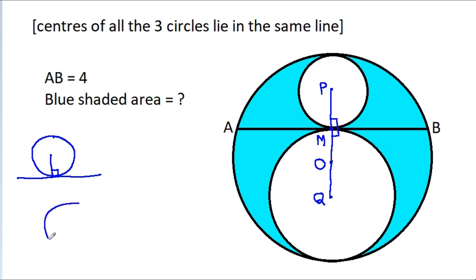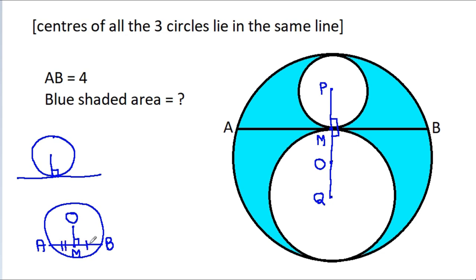In any circle, if AB is a chord and O is the center, and if we draw a perpendicular from O to AB at point M, then AM will be equal to BM. So AM equals BM, and since AB is 4, AM will be 2 and BM will be 2.